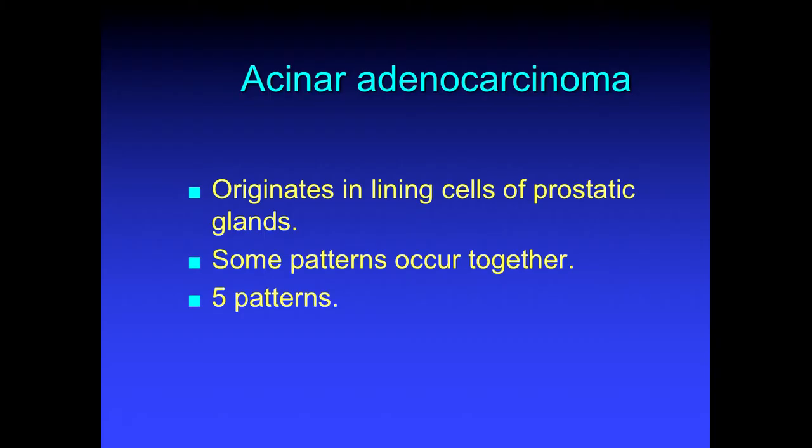The prostate gland is a glandular organ with lobules at the periphery that make secretions. They come into the central part of the prostate and are carried out by ducts. When we talk about acinar carcinoma, we're talking about tumours that arise from the lobules at the periphery of the gland — from the lining cells. There are numerous patterns; some can occur together, and it was originally determined by Donald Gleason that there were five patterns, although this is now abandoned.